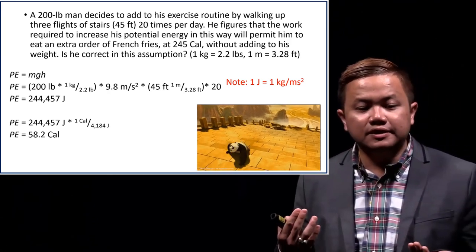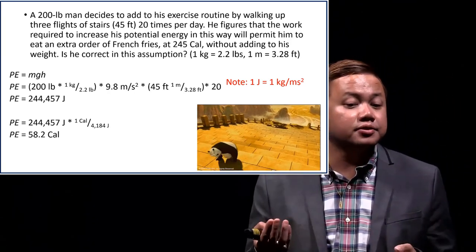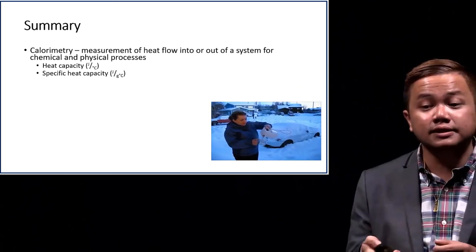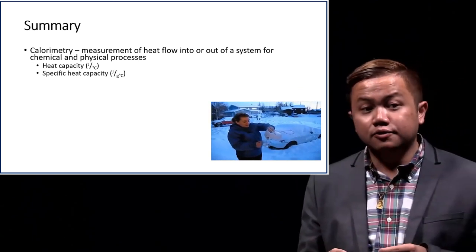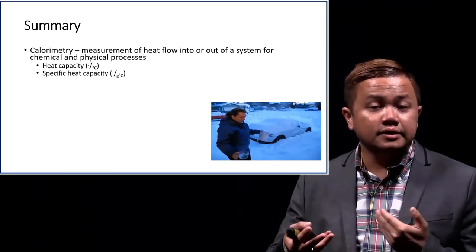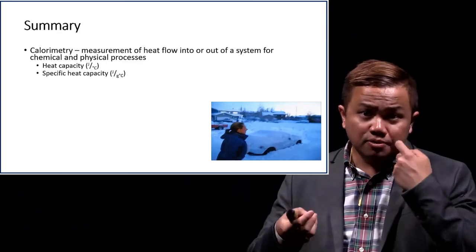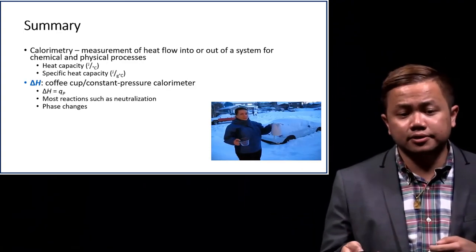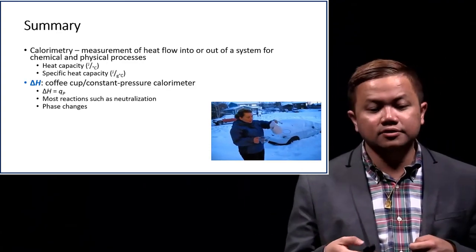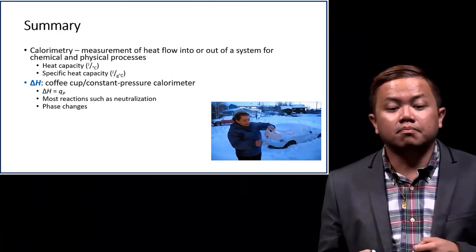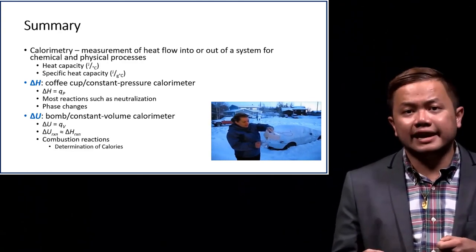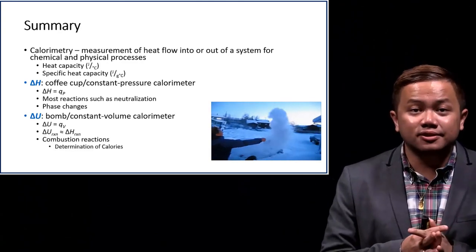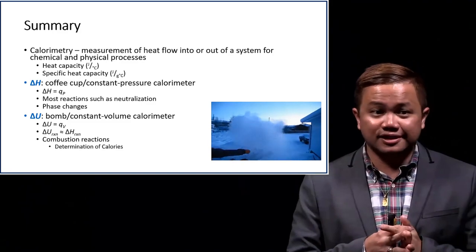In summary, calorimetry is the measurement of heat flow into or out of a system. We discussed how to measure delta H using coffee cup calorimeters and how to measure delta U using bomb or constant volume calorimeters. I would love to see you in the next lecture. Thank you for listening.